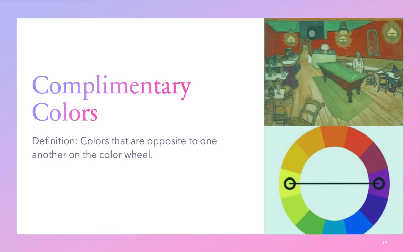Complementary colors are colors that are opposite to one another on the color wheel. If you look at the example, they are directly across from one another.